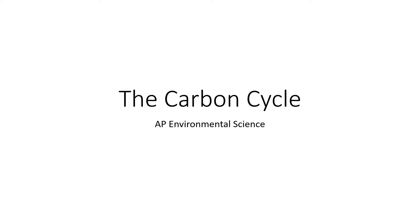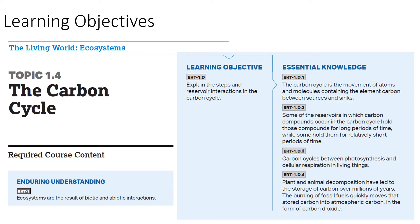Welcome everyone to AP Environmental Science Lecture on the carbon cycle. We're going to be looking at two learning objectives today. The primary one is topic 1.4, which is the carbon cycle. We are still with our biogeochemical cycles, and the enduring understanding is that ecosystems are the result of biotic and abiotic interactions, and carbon cycles between both biotic and abiotic components of the Earth. The learning objective is to explain the steps and reservoir interactions of the carbon cycle. And as usual, we'll go to the essential knowledge at the end.